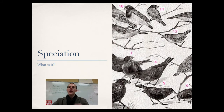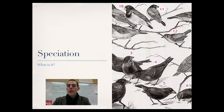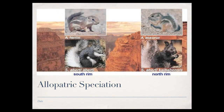The next topic is speciation. Speciation is the point at which two animal lines diverge from one another and they can no longer reproduce. Once two animals have become reproductively isolated, speciation has occurred and you now have two separate species. There are two types of speciation: allopatric speciation and sympatric speciation, describing how the speciation actually occurs.